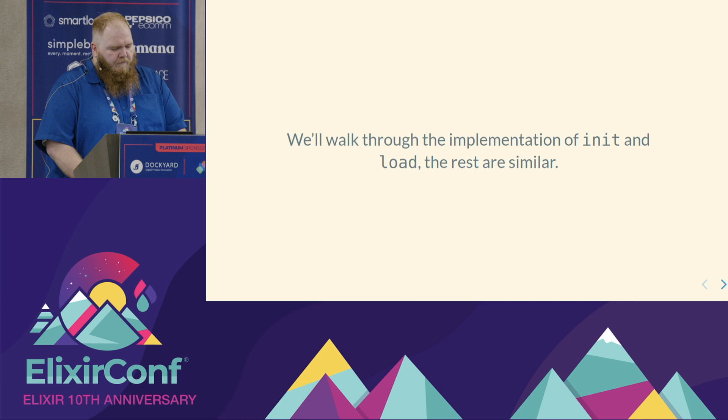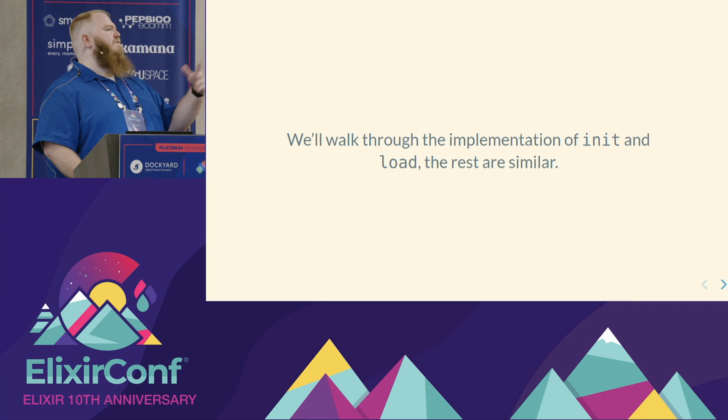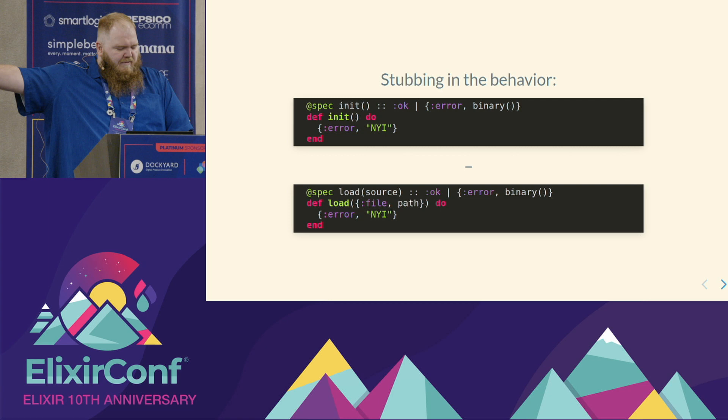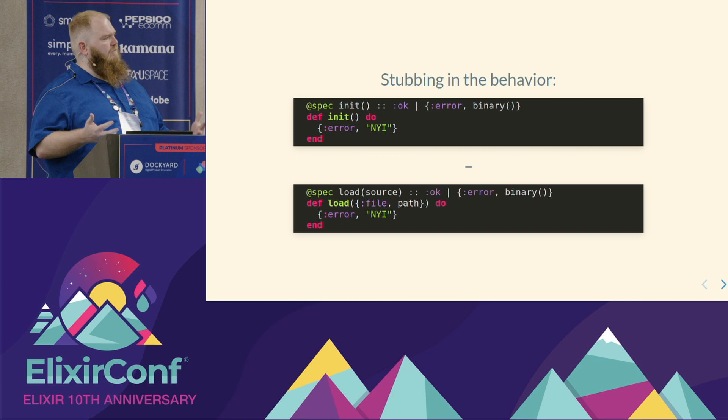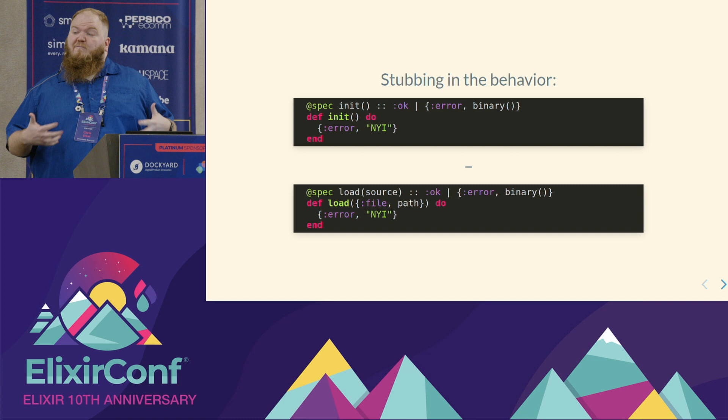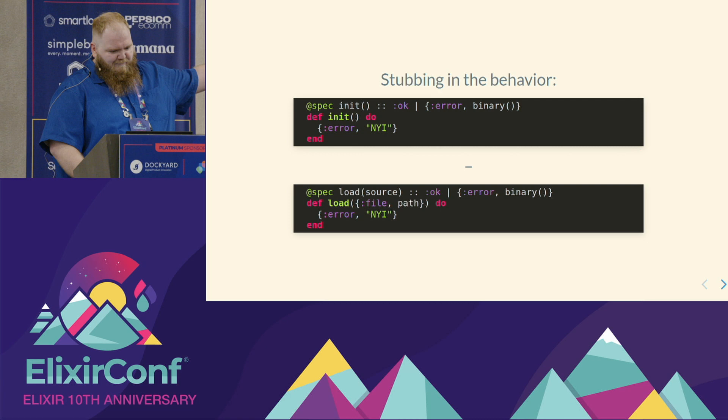Let's walk through the implementation of init and load — all other functions like set_volume, set_panning, etc. are basically the same. We start by stubbing in our behavior in Elixir. This is always my starting point — I just want to see what the module feels like and maybe play with it in IEX. If it doesn't pass the comfortable-in-IEX test, I know I'm doing something wrong. In this case, it's a type spec for init that immediately says it's not implemented yet.